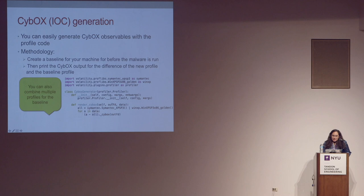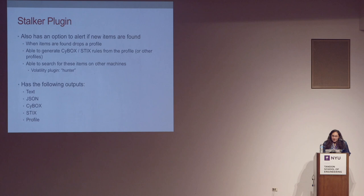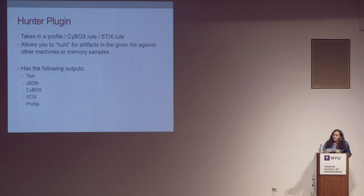Stalker works by adding new artifacts. When you hit Control-C it outputs whatever it's found up to that point. It also has all the same output formats we discussed: text, JSON, CybOX, STIX, and a profile. The Hunter plugin, which looks for CybOX or STIX rules, also has all of these different output options.